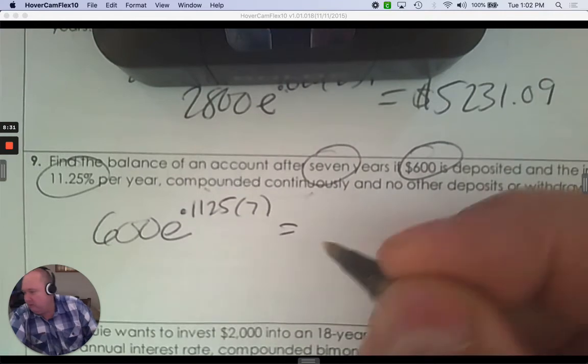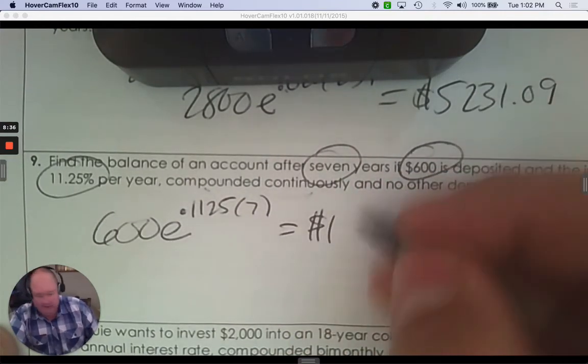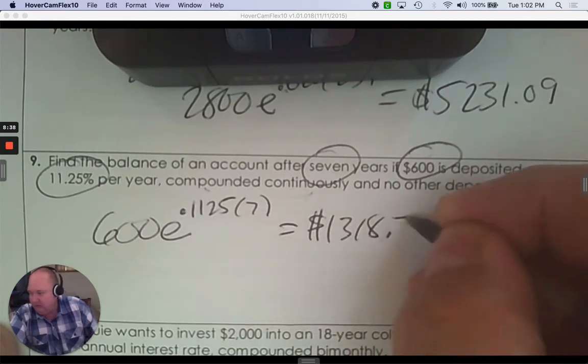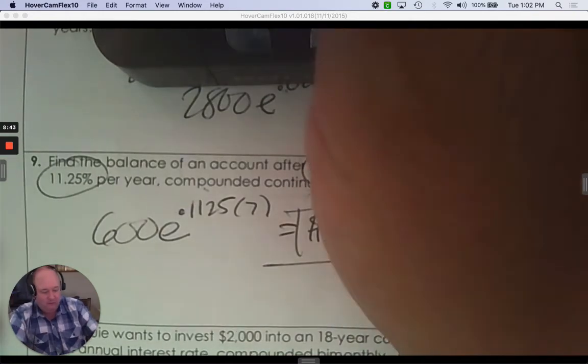How much money is that? Use your calculator. And it's $1,318.74. One left for your homework. I'm so proud of you. We're there. Number 10.